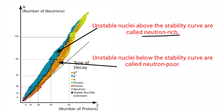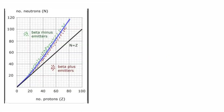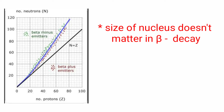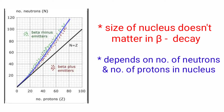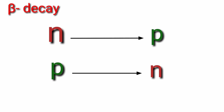Nuclei whose proton-to-neutron ratio differs from the stable value — either greater or less — undergo beta decay. Beta decay does not depend on the size of the nucleus but on the ratio of protons to neutrons. When neutrons outnumber protons, a neutron is converted into a proton and an electron is emitted — this is beta-negative decay. When protons outnumber neutrons, a proton is converted into a neutron — this is beta-positive decay.